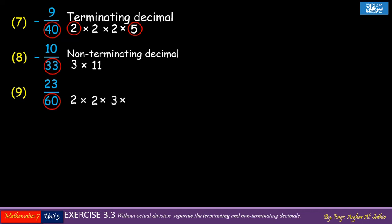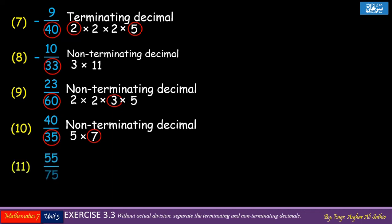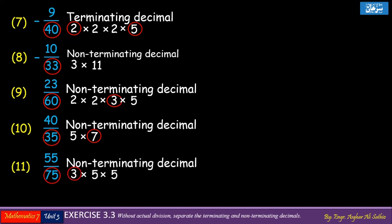According to the rule, problem number 8 is a non-terminating decimal. Problem number 9: digit 3 is available in its prime factors, and according to the rule it is a non-terminating decimal. Problem number 10: due to digit 7 in the prime factors of 35, according to the rule it is a non-terminating decimal. Problem number 11: due to 3 in the list of prime factors of 75, it is a non-terminating decimal.